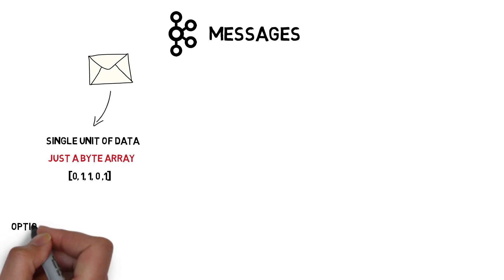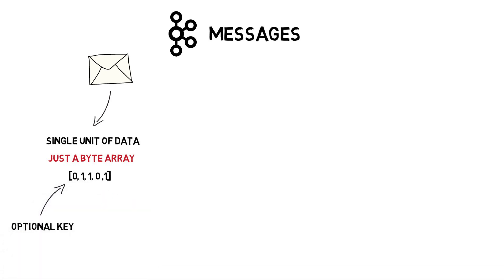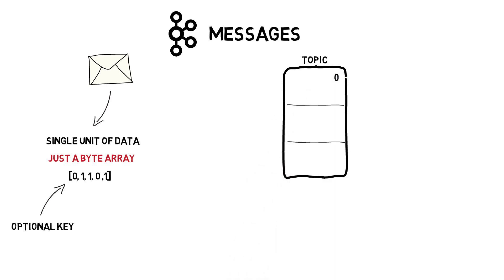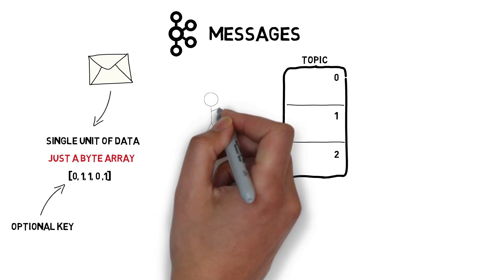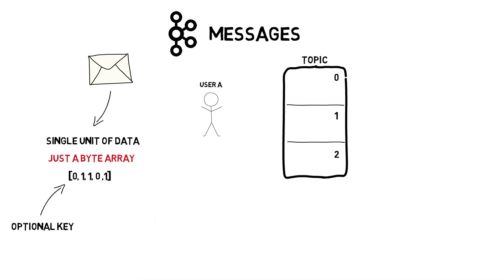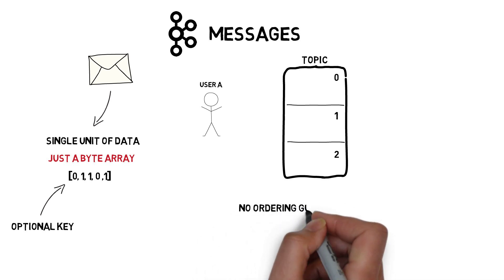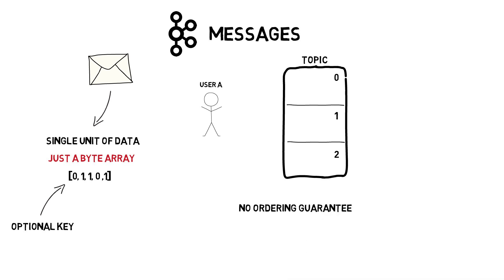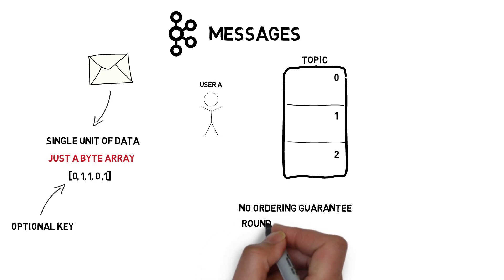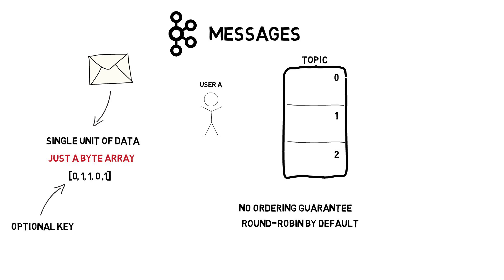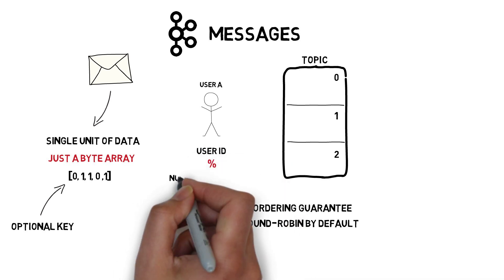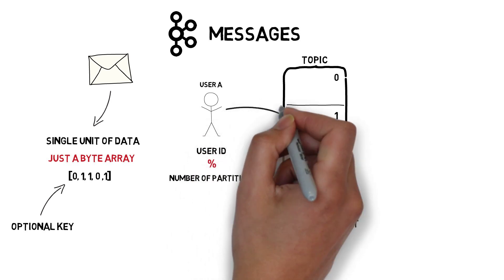A message can also have an optional key, also a byte array, that can be used to write data in a more controlled way to multiple partitions within the same topic. If a topic has multiple partitions, there is no guarantee which messages will be written to which partition — most likely in a round-robin fashion. To avoid that, we can define a consistent way for choosing the same partition based on a message key. One simple approach is using userid modulo number of partitions, which always assigns the same partition to the same user.